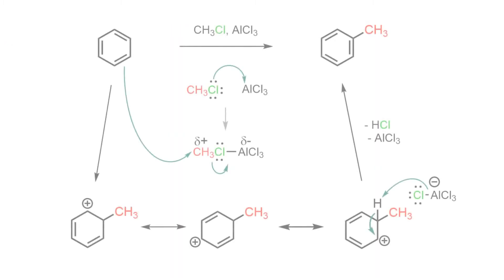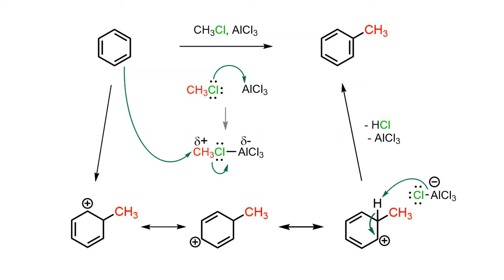The conversion features the alkyl halide complexing with the Lewis acid to form an activated complex in which the alpha carbon is now more electrophilic. Benzene is induced to behave as a nucleophile to form a stabilized sigma complex, from which a proton is lost to give the alkyl benzene and also regenerate the Lewis acid catalyst.